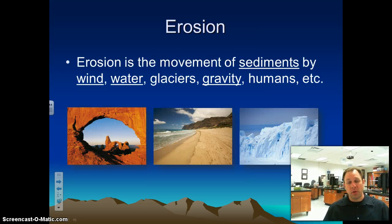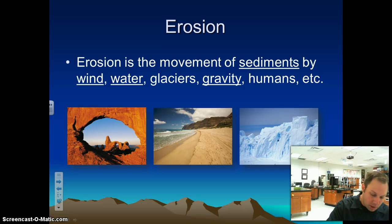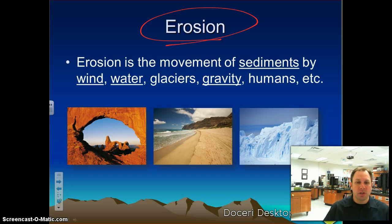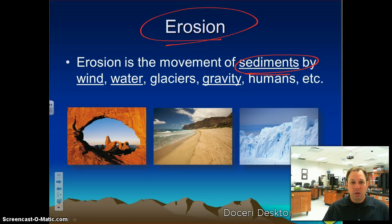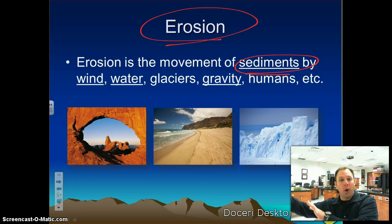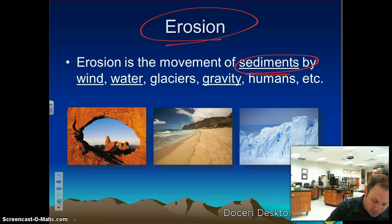So that was weathering in general — we had mechanical weathering and chemical weathering. Now we're going to talk about erosion. Erosion is part of weathering. Erosion is when sediments are moved by wind, water, glaciers, gravity, and humans. So we've taken rock, broken it down, and then erosion is when it's moved away — it's gone on to someplace else. Erosion is the movement of sediment.